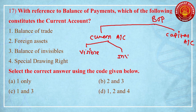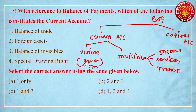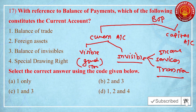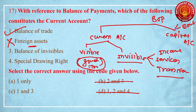The current account is composed of two dimensions: one is visible and second is invisible. Visible is composed of goods and is also called the balance of trade. Invisible is composed of three important things: income, services, and transfers. Capital account is composed of investment and borrowing as two important components. Going by this, trade in goods only is part of balance of trade — so the first option is correct. Foreign assets are purchased with investment and borrowing, so that is not part of the current account, eliminating options B and D. Balance of invisibles is also part of the current account, so the third option is correct. Therefore, one and three — your correct answer is C.